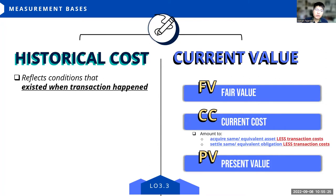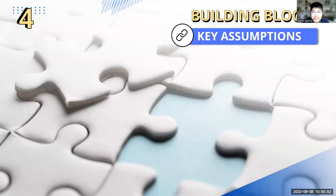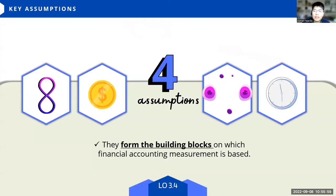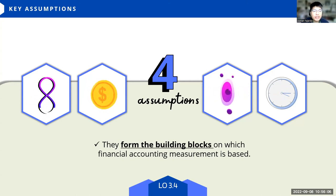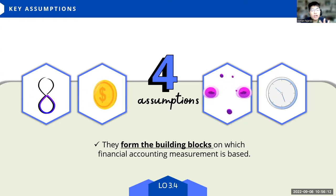In terms of measurement basis, there's historical cost — based on values at the time transactions happened — and current value, which includes fair value, current cost (the amount to acquire the same asset less transaction costs), or present value. The important thing is that there is a measurement basis to account for. The fourth building block is key assumptions — these are the assumptions that form the building blocks on which financial accounting measurement is based. We have four major assumptions, and in exercises and quizzes, if silent, these four always apply.